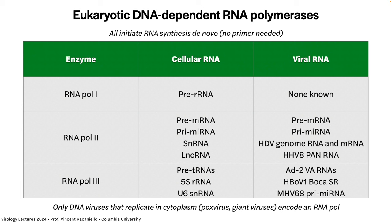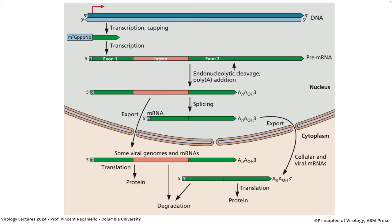Poxviruses and giant viruses reproduce in the cytoplasm of a cell, so they don't have access to these polymerases because Pol I, II, and III are principally in the nucleus. They are made in the cytoplasm but immediately imported into the nucleus, so there are effectively none of those proteins in the cytoplasm. Therefore, if a virus reproduces in the cytoplasm, it must encode its own DNA-dependent RNA polymerase.